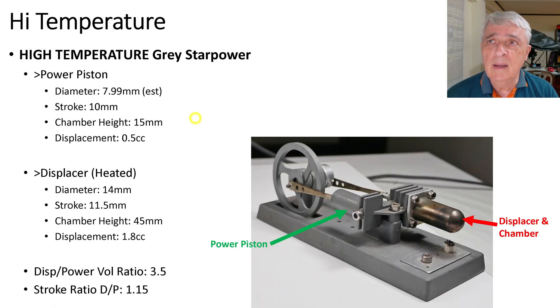This is the first of the high temperature. It is the grey Star Power. Star Power is the brand name. The power piston, which is over here on this one, is 7.99 millimeters in diameter. And the stroke this way is 10 millimeters. The chamber height, so it's actually the length because it's laying this way, is 15 millimeters, and the displacement is 0.5 cc, so not very much.